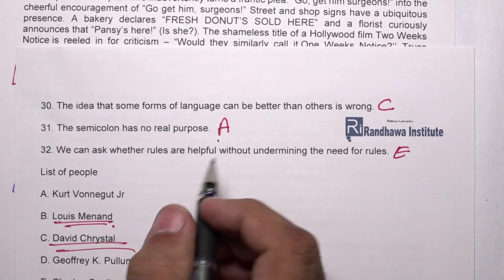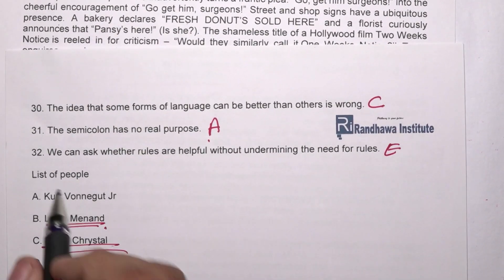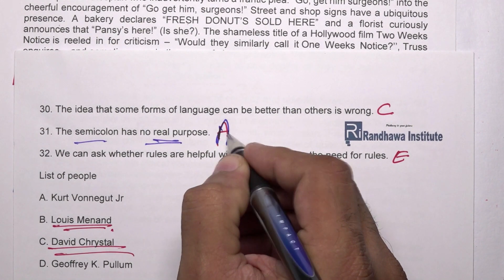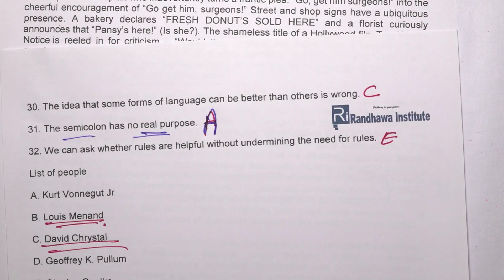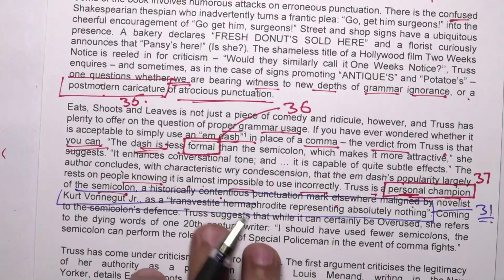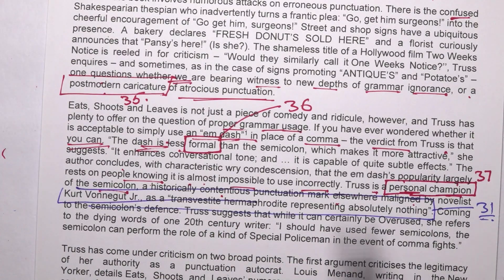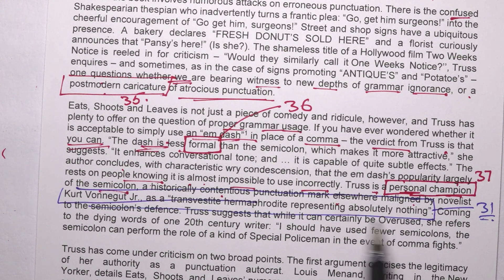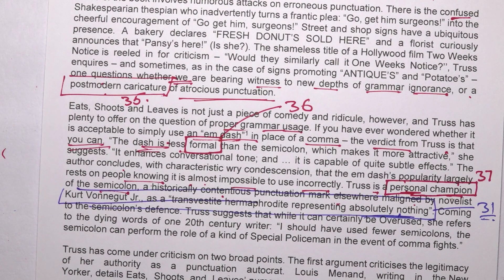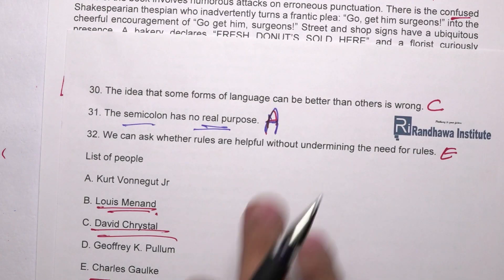The one remaining question is the 31st: 'The semicolon has no real purpose.' The answer is A. This is mentioned in the third paragraph of the first page — the semicolon 'represents absolutely nothing,' meaning it has no real purpose. Answer for question 31: A.